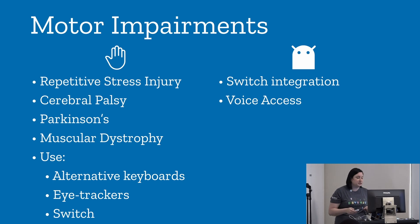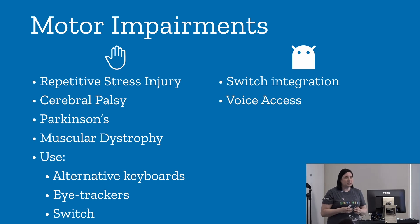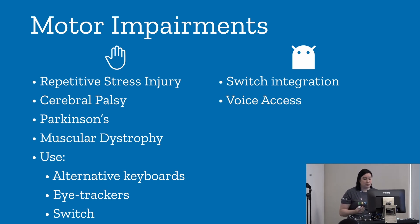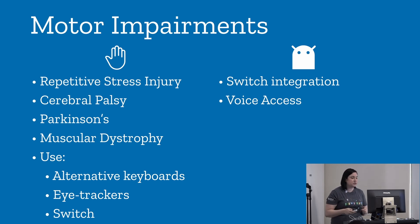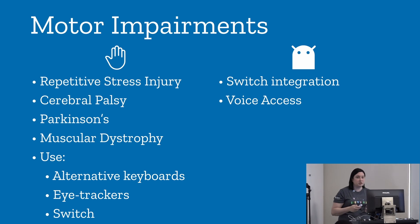Motor impairments include repetitive stress injury — something programmers are a little at risk for — as well as cerebral palsy, Parkinson's, and muscular dystrophy. People with these disabilities use alternative keyboards, eye trackers, or a Switch device. A Switch has two buttons: one to navigate across the screen and another to select. Android provides Switch integration and also voice access to control a device with spoken commands.